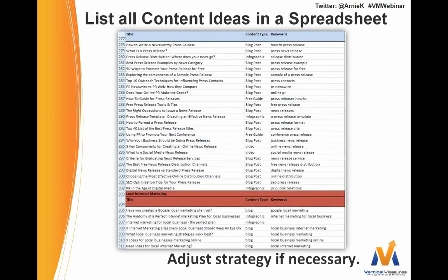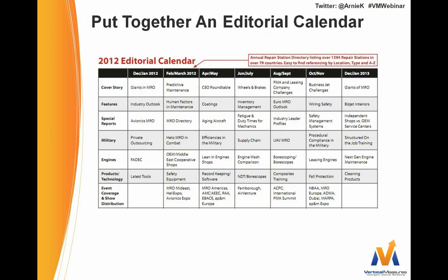Once you've done all this — and it can be done in just a few days — at Vertical Measures, getting ready for about a six-month content calendar, we came up with just under 500 content ideas in less than 72 hours by following very much the same advice I just gave. We recommend you list possible titles, what kind of content you think you might create with that title, and the keyword phrase you're going to emphasize with that piece of content.